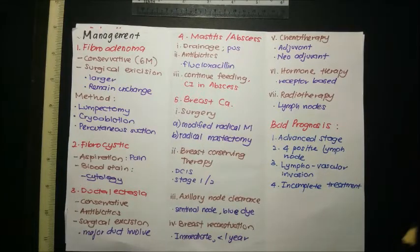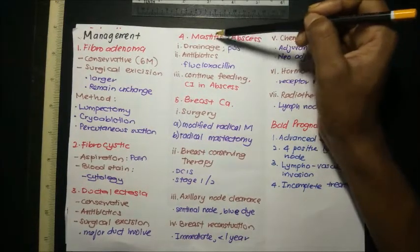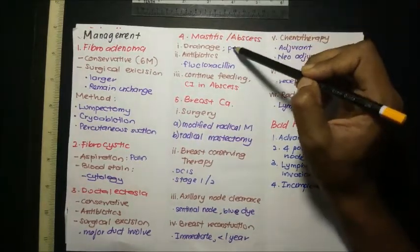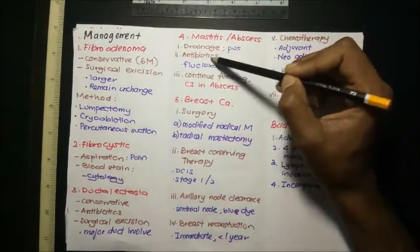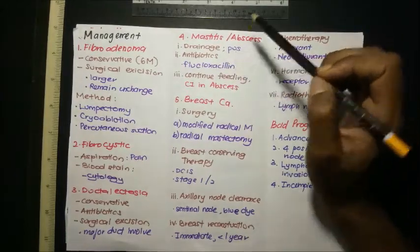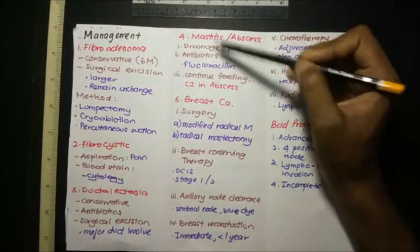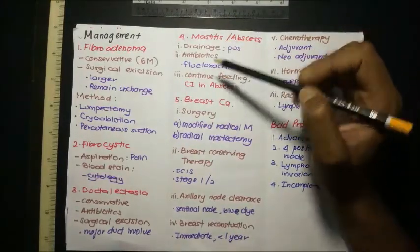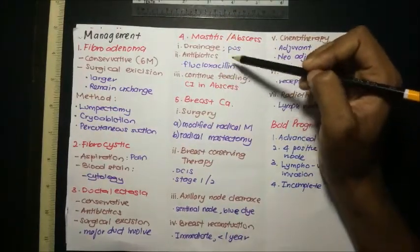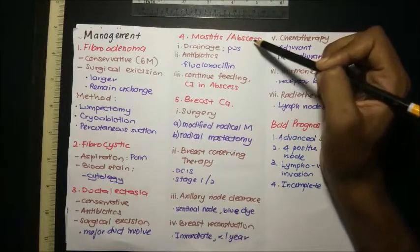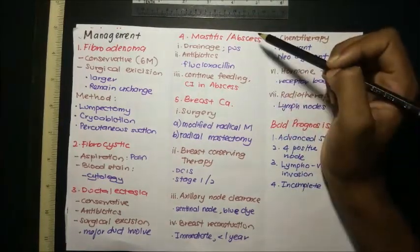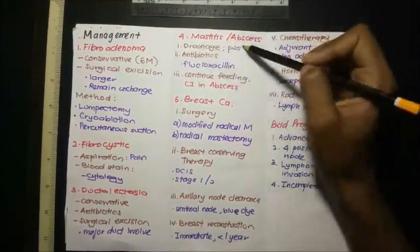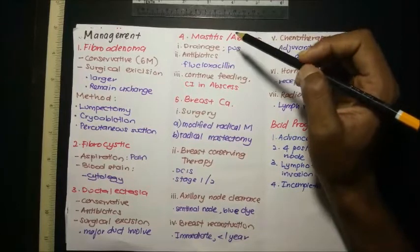For mastitis and abscess, drain the pus and prescribe antibiotics — flucloxacillin is usually prescribed. The key difference between mastitis and abscess: in mastitis, the patient is advised to continue feeding from the affected breast; in abscess, feeding from the affected breast is not advised. In both conditions, breast support should be provided.